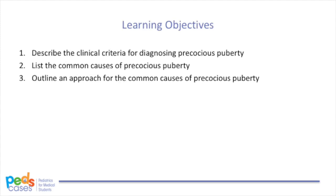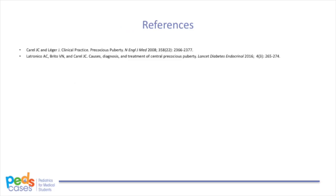Let's conclude this video with a review of our learning objectives: describe the clinical criteria for precocious puberty; list the common causes of precocious puberty; outline an approach for the common causes of precocious puberty. Thanks for your attention, and be sure to check out part 3 of our series on an approach to delayed puberty. Check out www.pedscases.com for more great podcasts, videos, interactive cases, questions and more. Press subscribe on iTunes to get access to all of our podcasts, and if you like what we do, please leave a review on the iTunes store, share with your friends and colleagues, or think about getting involved.